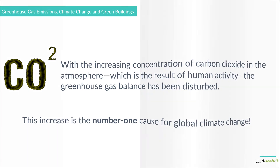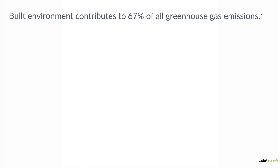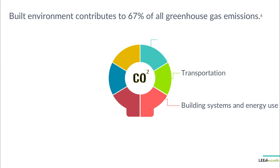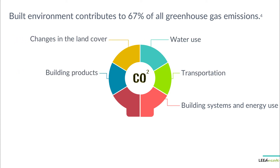As discussed, the built environment contributes to 67% of all greenhouse gas emissions. This comes from building systems and energy use, transportation, water use, changes in the land cover, building products, and construction.